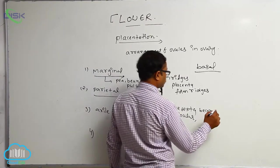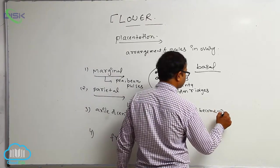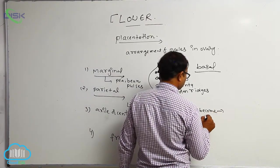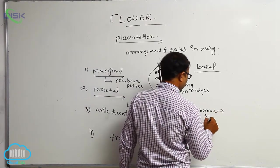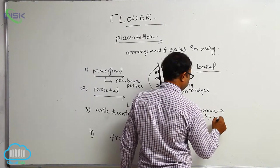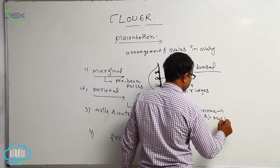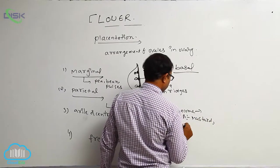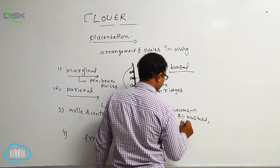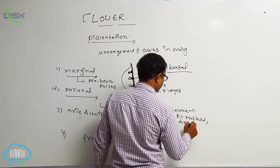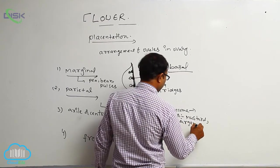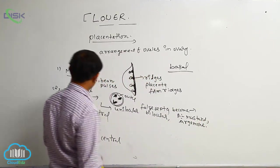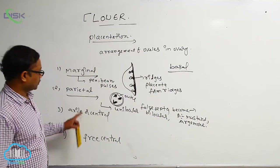Examples of parietal placentation include mustard (Brassica) and Argemone.